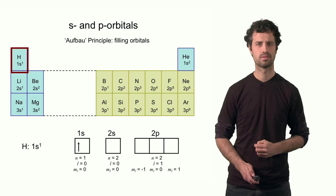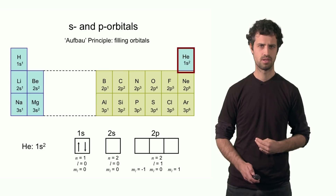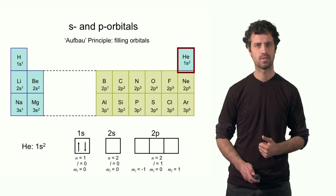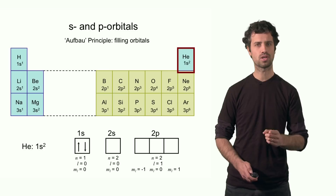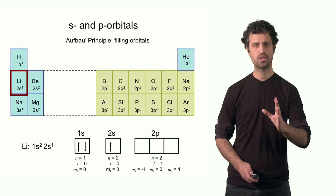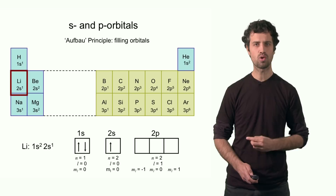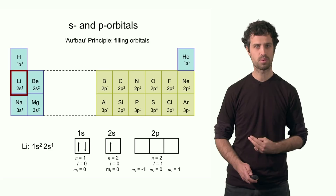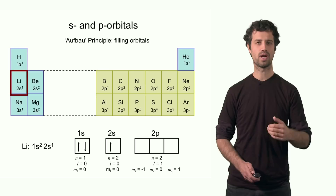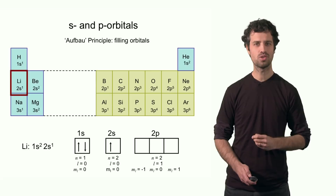The second element is helium, which has two electrons. The Aufbau principle states the second electron goes into the lowest available orbital — still the 1s — but with opposite spin. The electron configuration of helium is 1s². Lithium is the third element with three electrons. The third electron cannot join the two paired electrons in the 1s, so it goes into the next available orbital of lowest energy: the 2s. The electron configuration of lithium is 1s² 2s¹.